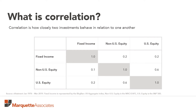We look at the correlation between each one of these asset classes. For example, if we look at fixed income — the first row going across in this table — and compare it to non-US equity and US equity, we see that the correlation between non-US equity and fixed income is 0.2, or 20%. So for any given move in fixed income, non-US equities are likely to rise about 20% as much as fixed income asset values have risen. Similarly, for US equities, they also have a correlation of 0.2, so US equities will move about 20% as much as fixed income does.